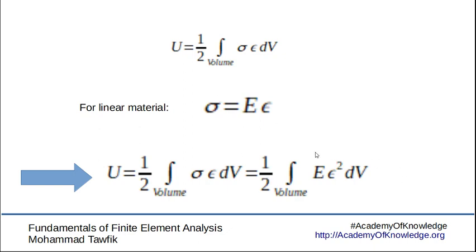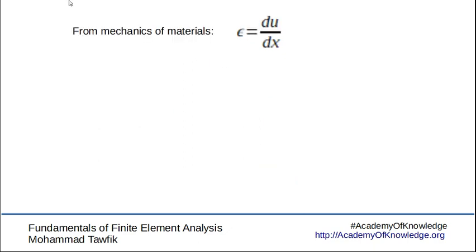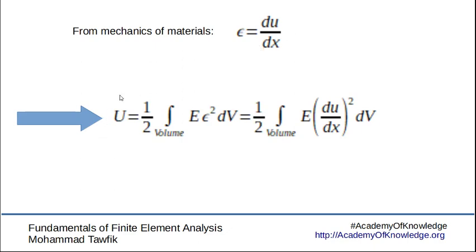We take this one step further using mechanics of materials: the strain for a bar is defined as the rate of change of deflection with respect to the x-coordinate, or the length of the bar. Using that, we finally get an expression for the potential energy or elastic energy in terms of the deflection, with the deflection differentiated with respect to x. So we started from stress and strain as functions representing the potential energy and ended up with the potential energy expressed in terms of the deflection.